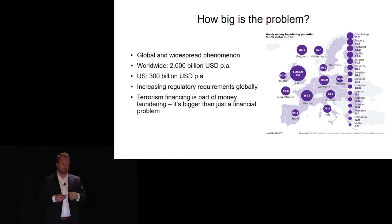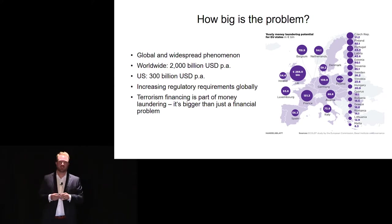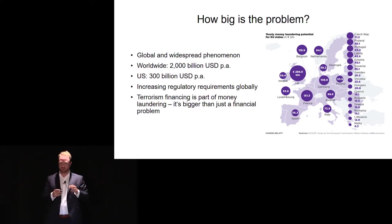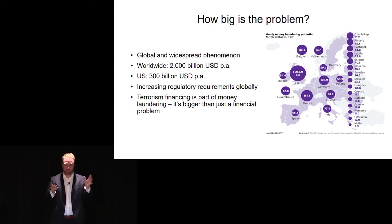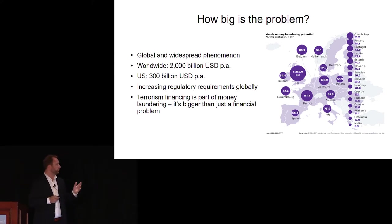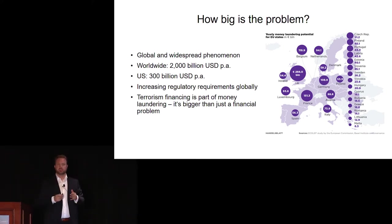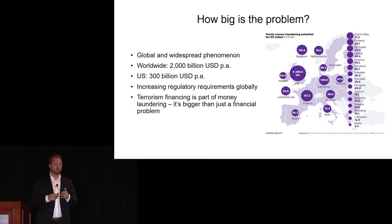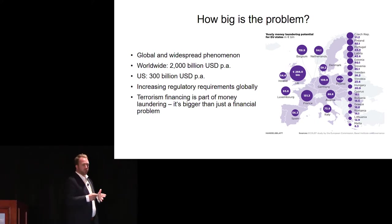If we look at the scale of money laundering globally, it's massive. We're talking about 2,000 billion US dollars annually across the globe — or 2 trillion US dollars. In the UK alone it's 350 billion pounds. It's a global phenomenon.